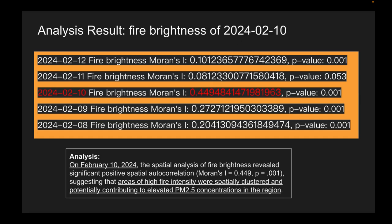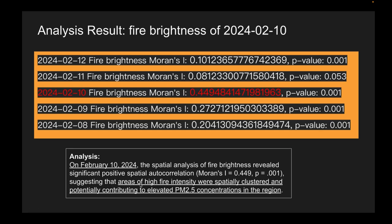We found out that the fire brightness on February 10th had the highest Moran's I value. On February 10th, 2024, the spatial analysis of fire brightness revealed a significant positive spatial autocorrelation, suggesting that areas of high fire intensity were spatially clustered and potentially contributing to elevated PM2.5 concentration in the region.